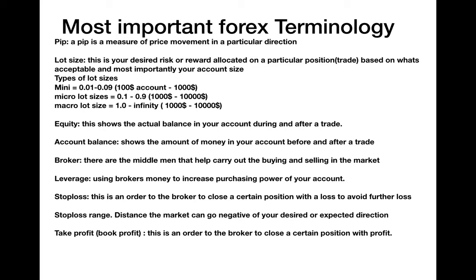For accounts from $1,000 to $10,000, use 0.1 — which means $1 per pip — up to 0.09 which is about $9 per pip. Macro lot sizes should be used from a $10,000 account to infinity, starting from 1.0, which means $10 per pip. So if the market moves 10 pips using 1.0 lot size, you gain or lose $100 — which can happen within one or two minutes.